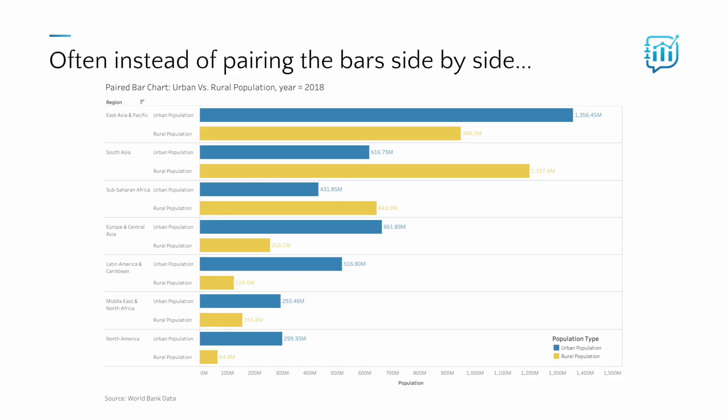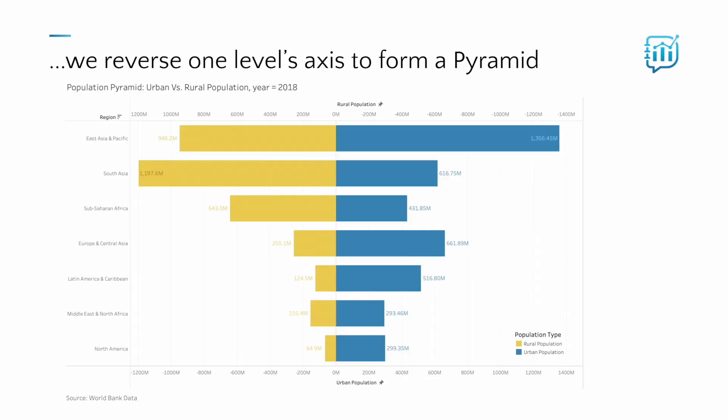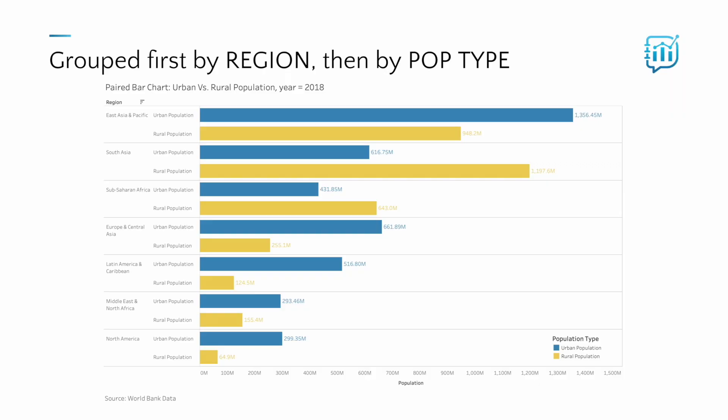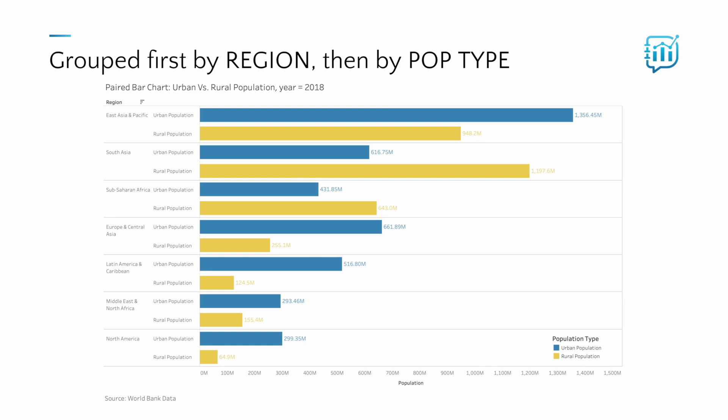Let's talk about alternatives. Instead of pairing the bars side by side, we can reverse one of the levels' axis and create a pyramid chart — sometimes called a tornado chart — like this one. This is basically a stacked bar but with lengths that diverge from a common centerline. Or instead of first grouping by region and then by population type, we can reverse the order — first group by population type and then by region — which makes it easier to compare regions within each population type level.